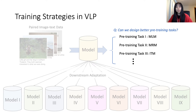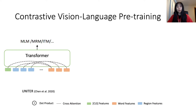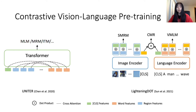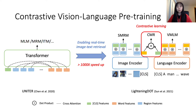The second question is: can we design better pre-training tasks? Following the pioneering works in VLP, for example Uniter, the commonly used pre-training tasks are masked language modeling, masked region modeling, and image-text matching. In Lightning Dot, the authors proposed a two-stream architecture with a dot product as the multimodal fusion method. This design has enabled real-time image-text retrieval and achieved more than 1,000 times speed-up compared to the excessive cross-attention adopted in Uniter.